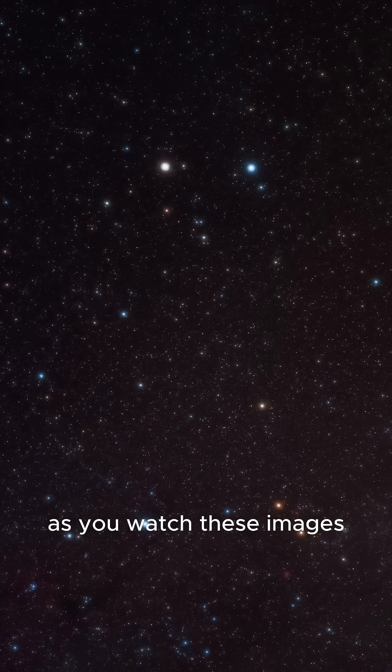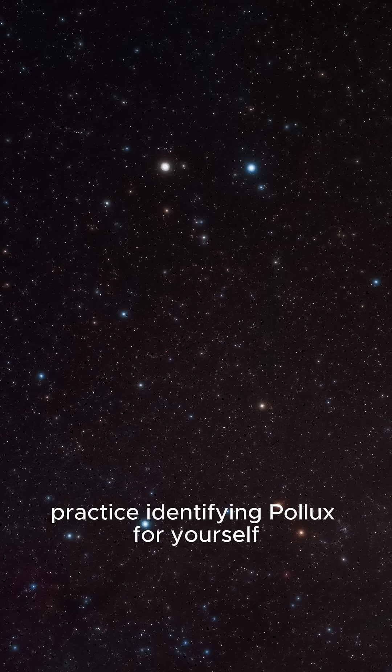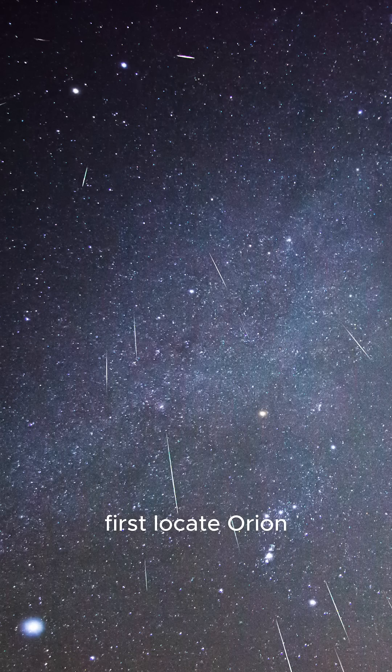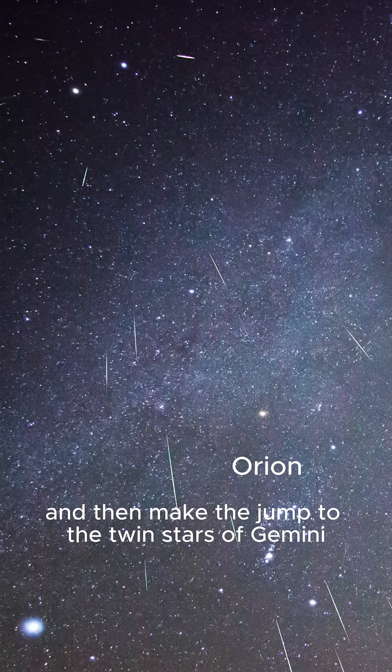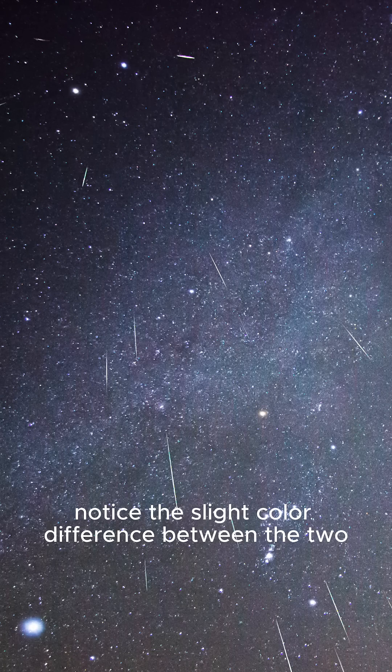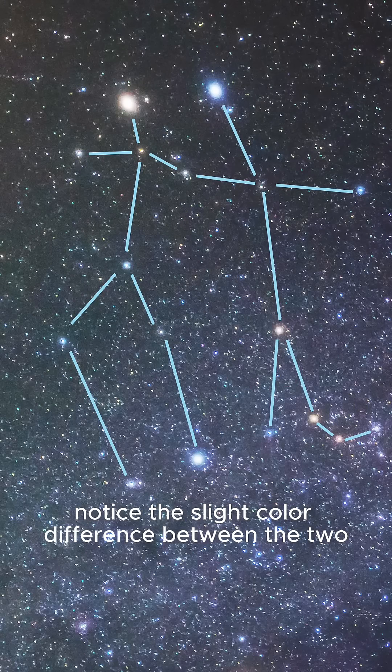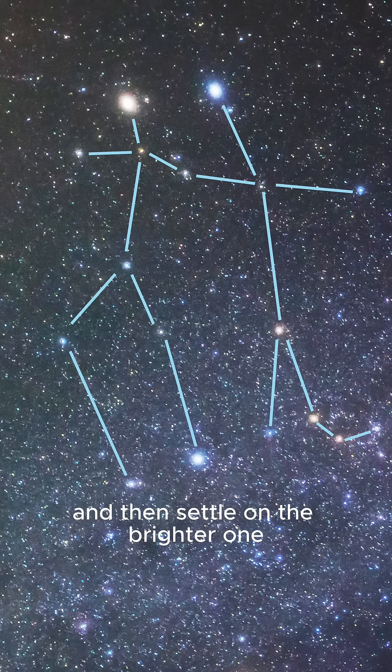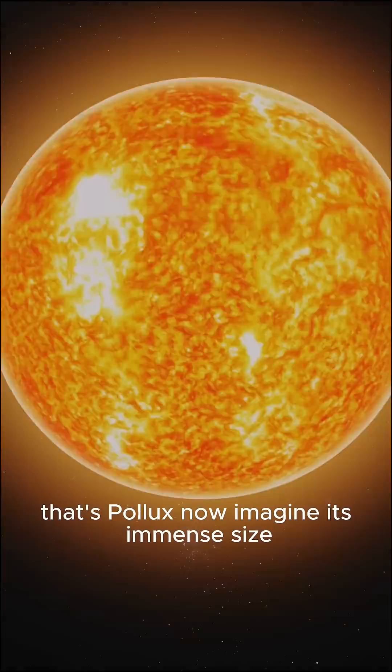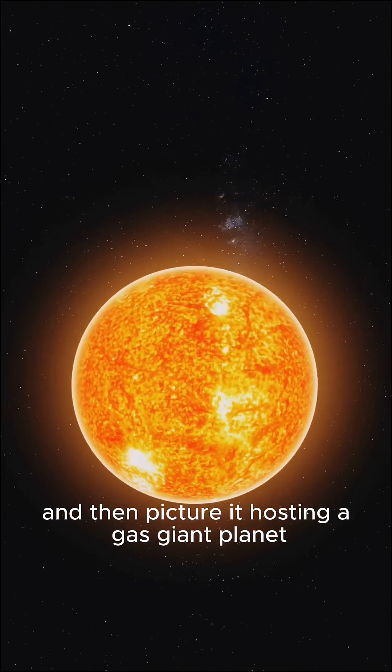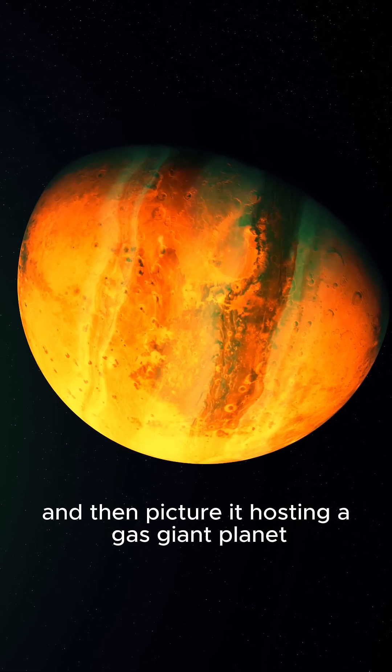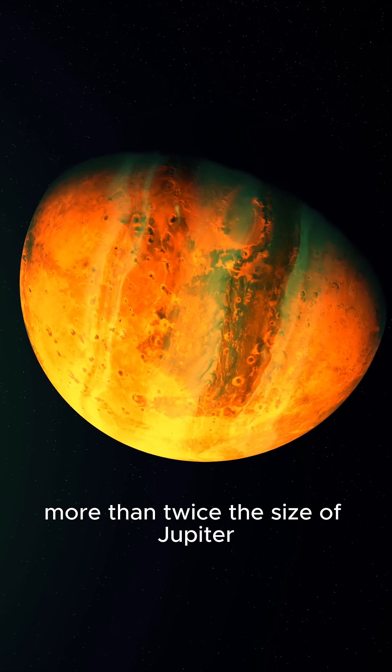As you watch these images, practice identifying Pollux for yourself. First, locate Orion, and then make the jump to the twin stars of Gemini. Notice the slight color difference between the two, and then settle on the brighter one. That's Pollux. Now imagine its immense size, and picture it hosting a gas giant planet more than twice the size of Jupiter.